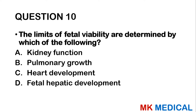Question 10: The limits of fetal viability are determined by which of the following? A — kidney function. B — pulmonary growth. C — heart development. D — fetal hepatic development. The most important thing for survival outside the uterus is oxygen and air. The better the development of the lungs, the better the chance of survival. The answer is B — pulmonary growth.